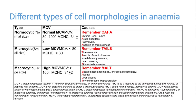Macrocytic anemia: MCV more than 100. Remember the mnemonic MALT — Megaloblastic anemia (the most important cause: B12 or folic acid deficiency due to nutritional deficiency), Alcohol and chronic alcoholism, Liver disease (chronic), Thyroid disease especially hypothyroidism. These are the conditions to remember when planning to treat anemia cases.